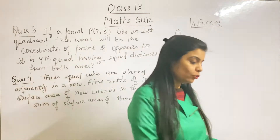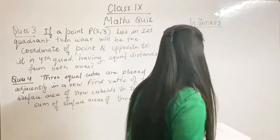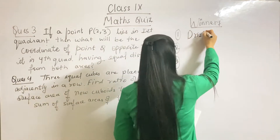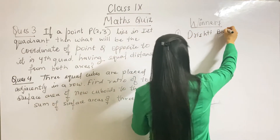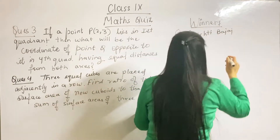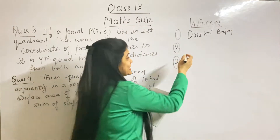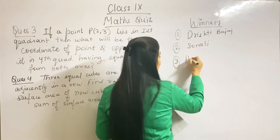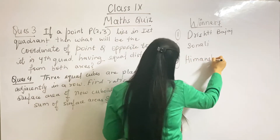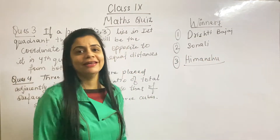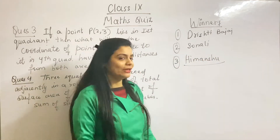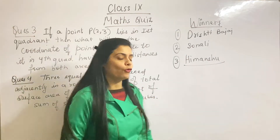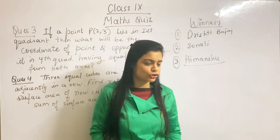The first three winners I am going to announce. First is Drishti Bajaj — Drishti Bajaj gave the first answer very quickly. Next is Sonali. And the third one is Himanshu. So these are the winners of yesterday's questions — question number 3 and question number 4. Very good.